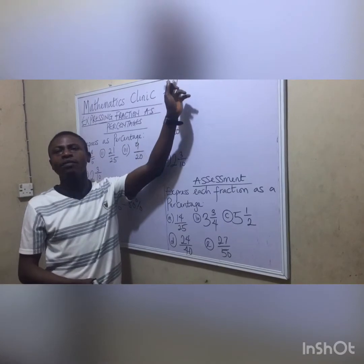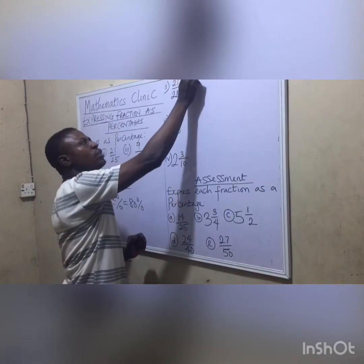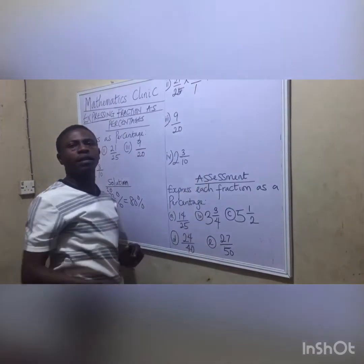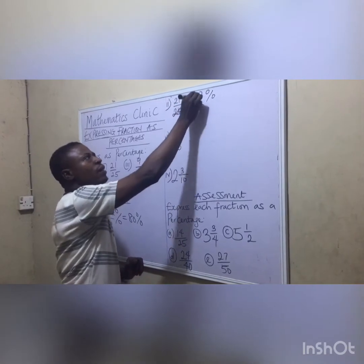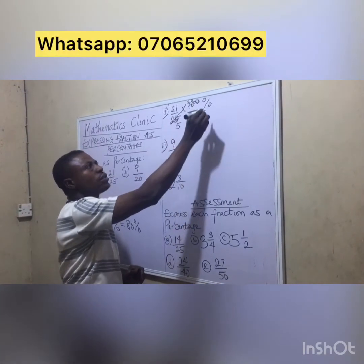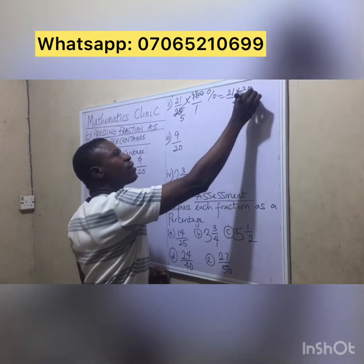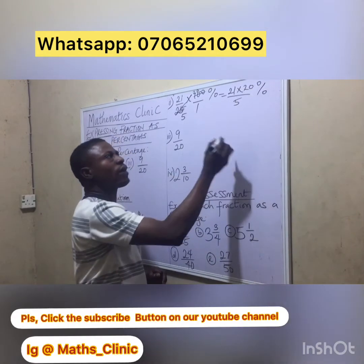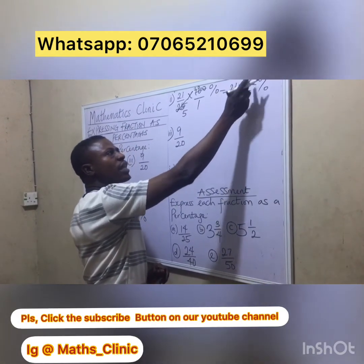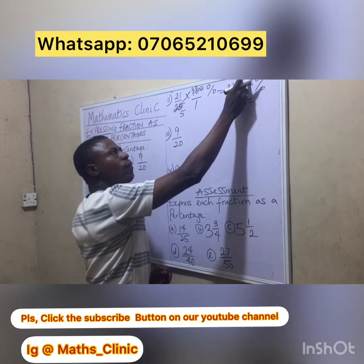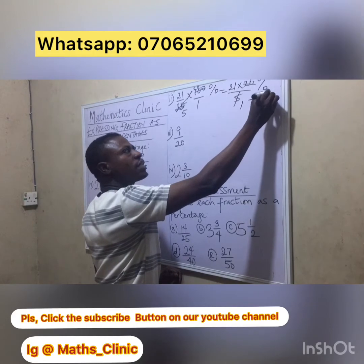Second example: 21 over 25. Multiply by 100 over 1%. Now let's cancel: 5 goes into 25 five times, and 5 goes into 100 twenty times. So we have 21 times 20 over 5. Then 5 goes into 20 four times, leaving 21 times 4. 4 times 1 is 4, and 4 times 2 is 8, giving us 84%.